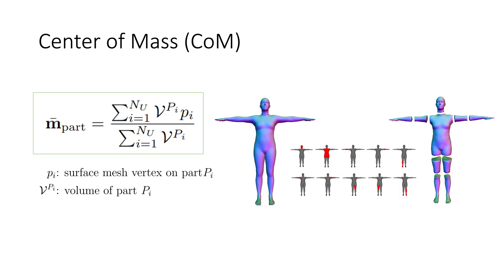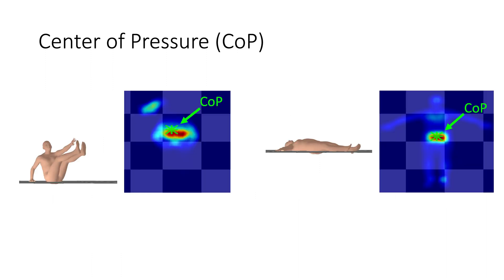To accurately compute the body center of mass, we take part-specific mass contributions into account. We use differentiable close-translate-fill operations to compute per-part volumes. Assuming that the human body has uniform density, the center of mass is the volume-weighted average of uniformly sampled surface points on the SMPL mesh.